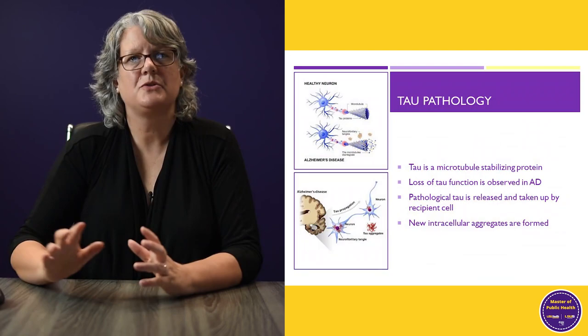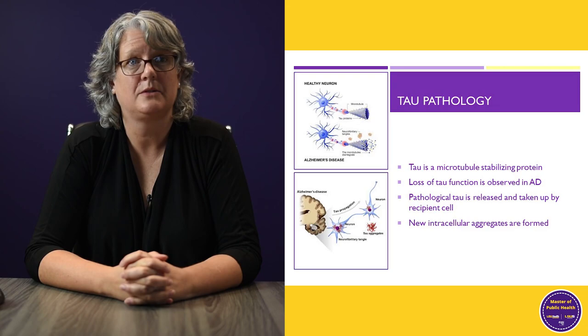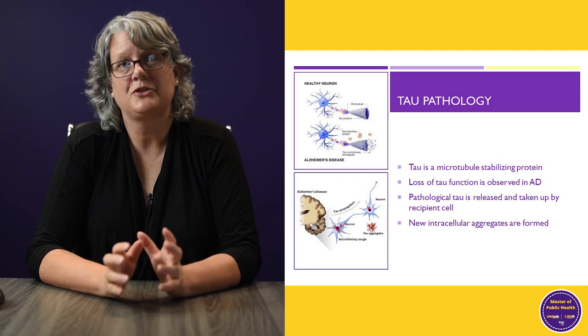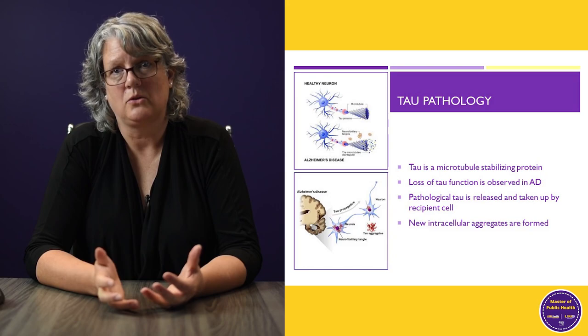Tau is a microtubule stabilizing protein. It forms a structure that helps nerve cells maintain their stabilization and structure, and it starts to disintegrate in Alzheimer's disease, and the pieces form tangles.